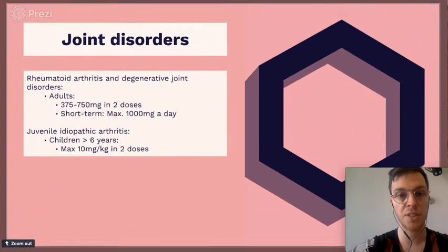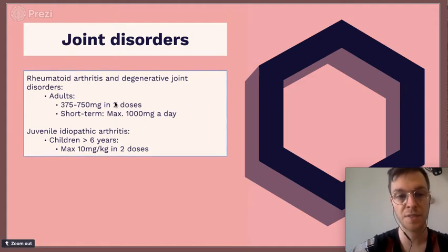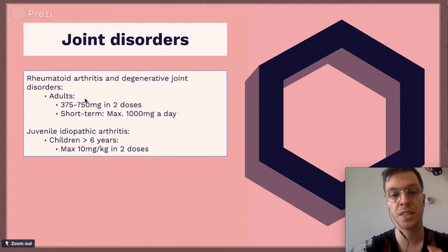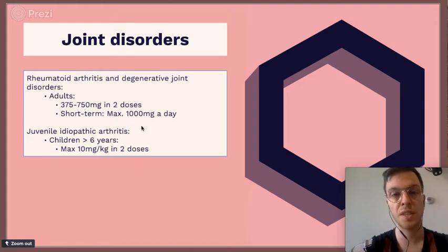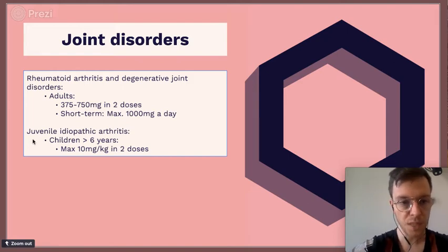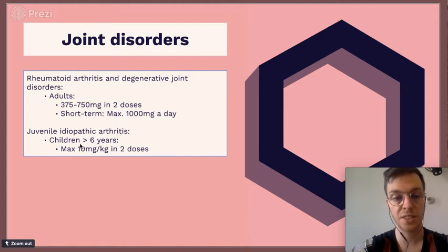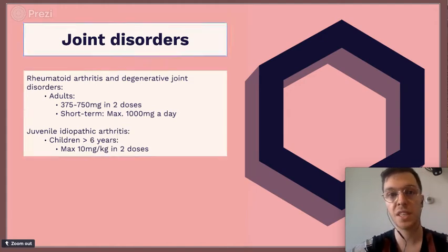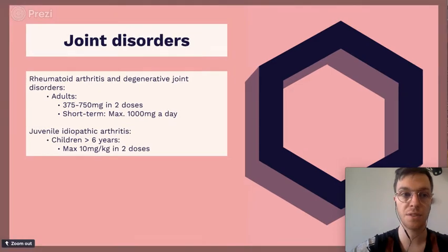For joint disorders like arthrosis or arthritis, adults can take 275 to 750 milligrams in two doses. For short-term use, you can use up to 1000 milligrams per day, but only for a maximum of one week. For juvenile idiopathic arthritis in children older than 6 years, 10 milligrams per kilogram divided over two doses can be given.